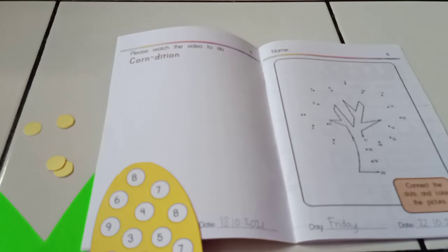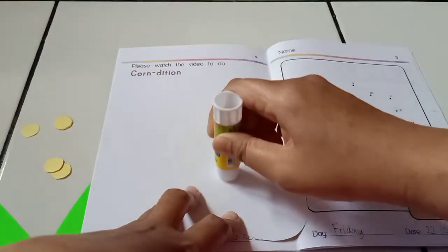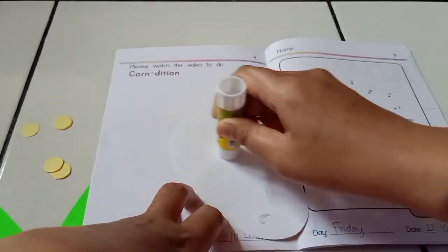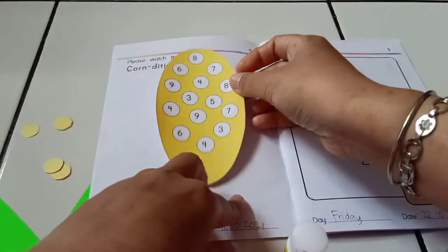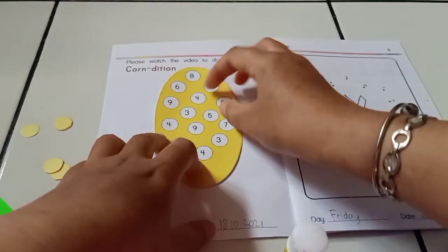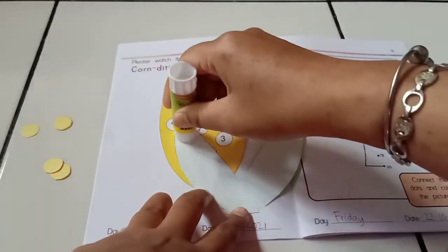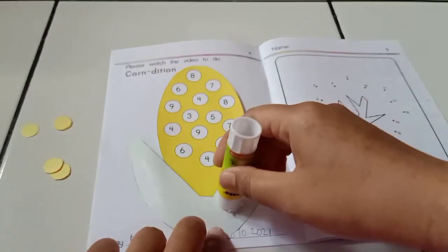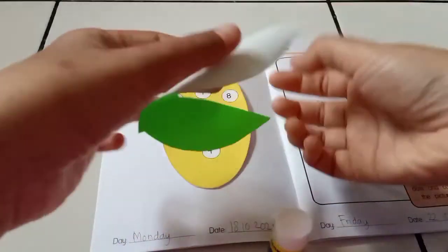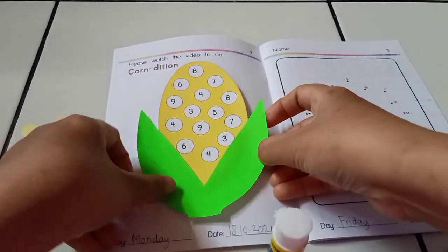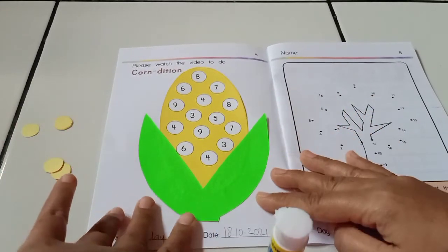We are going to model corn and stick it on page 4. Please watch this video carefully. To stick the small yellow circles, first you need to add the numbers, and then paste the yellow circles in the correct answer.